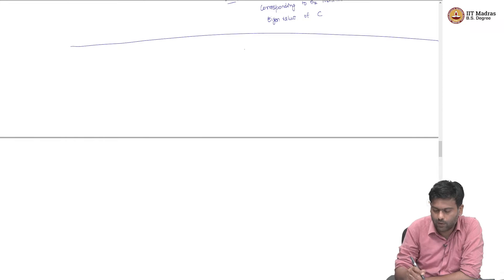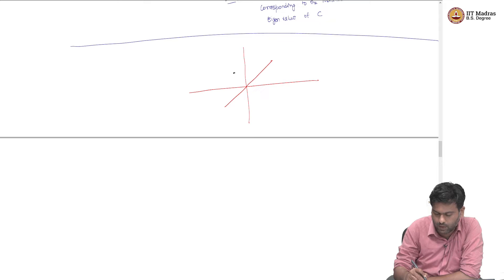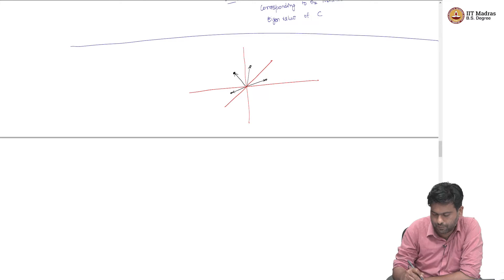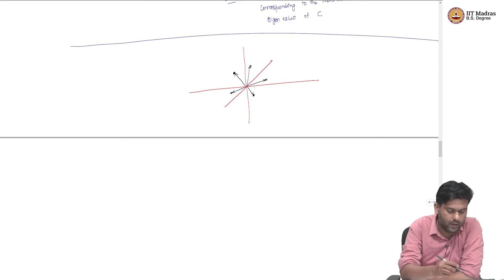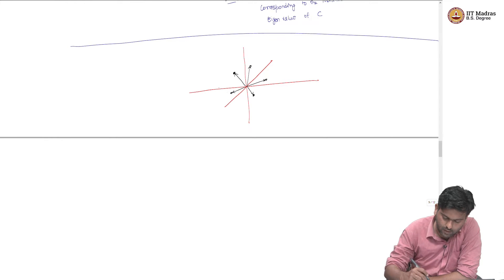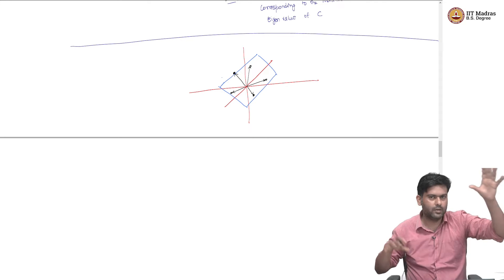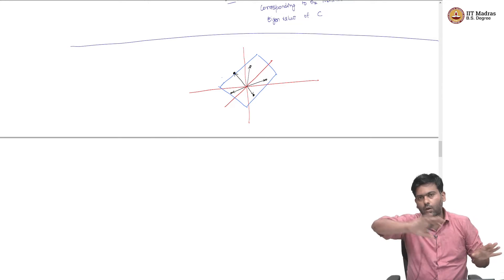Let us go from 2D to 3D. Now you are in 3D, and let us say your data points are a bunch of vectors in 3D — here, here, here and so on. Now imagine that all these vectors were along a plane. So it is a three-dimensional space, but the data points are not scattered everywhere — they all fall along a plane.